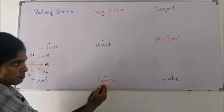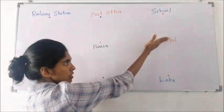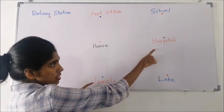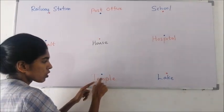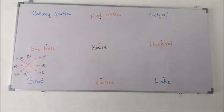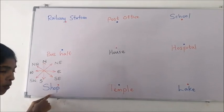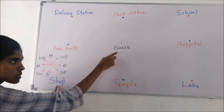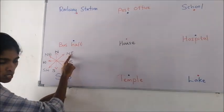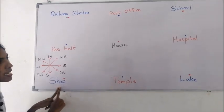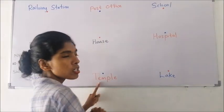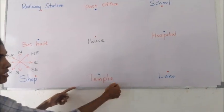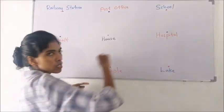By standing at the temple, we look at the hospital. From temple to hospital, the direction is north-east. So the hospital is located to the north-east direction of the temple. Looking at the house from the shop, the house is located to the north-east direction of the shop. The temple is located to the south-west direction of the hospital.